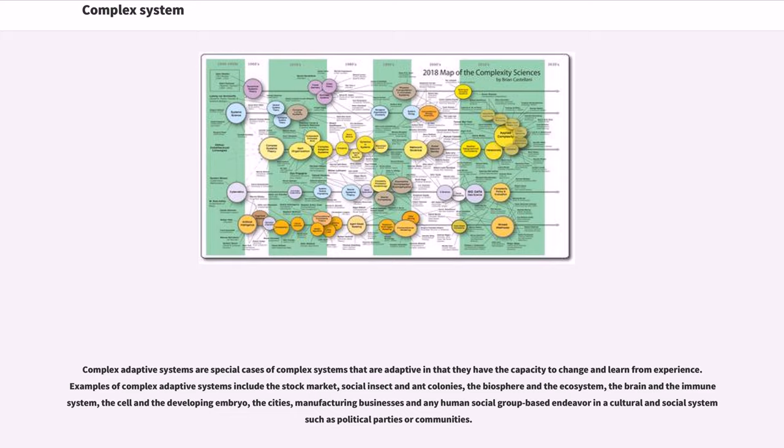Complex adaptive systems are special cases of complex systems that are adaptive in that they have the capacity to change and learn from experience. Examples of complex adaptive systems include the stock market, social insect and ant colonies, the biosphere and the ecosystem, the brain and the immune system, the cell and the developing embryo, the cities, manufacturing businesses and any human social group-based endeavor in a cultural and social system such as political parties or communities.